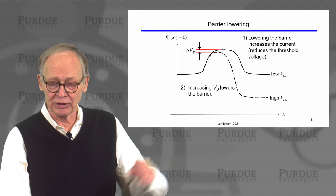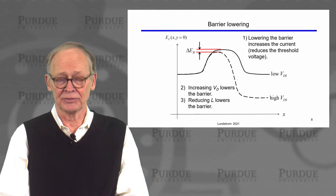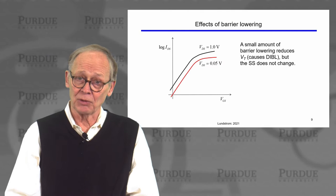If we increase the drain voltage, we'll have more barrier lowering. Or if we reduce the channel length and bring the drain closer to the source, we'll also get more barrier lowering. To find precisely how much, we would do a numerical solution of the two-dimensional Poisson equation.